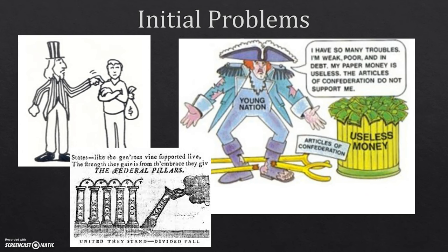A third big problem was that it took the unanimous agreement of every state for the Articles to go into effect and to amend them. To pass any federal law, all 13 states had to agree — which is why it took three and a half years for the AOC to even go into effect. One state held every other state hostage until its demands were met, and that state was Maryland.